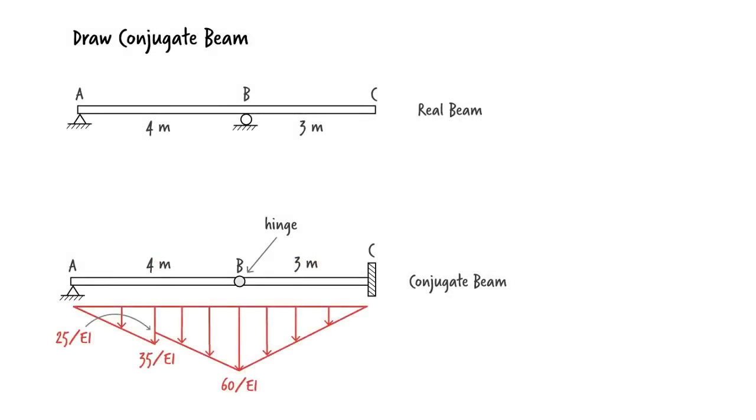Let's place the M over EI diagram as a distributed load on the conjugate beam. Here, we want to determine the slope of the real beam at A. Therefore, we need to calculate the shear at A in the conjugate beam.